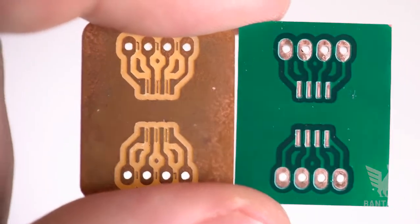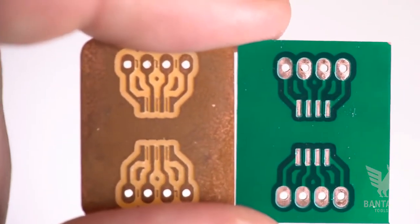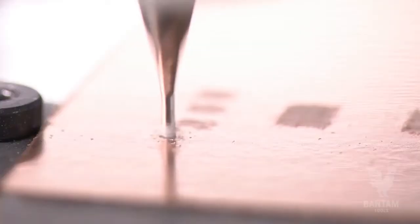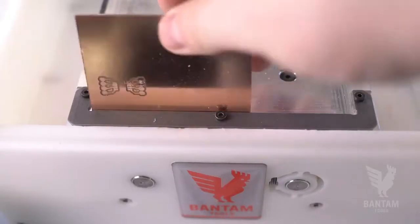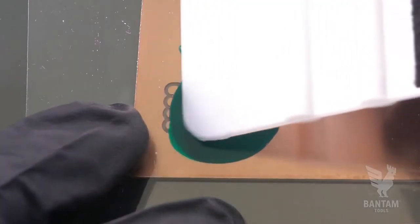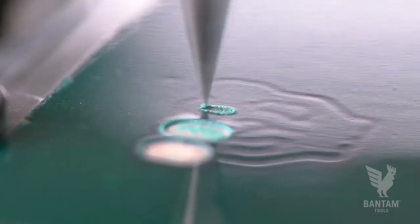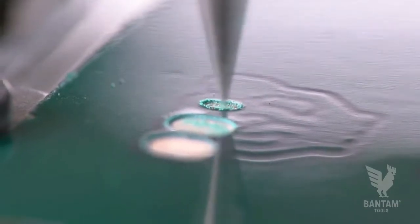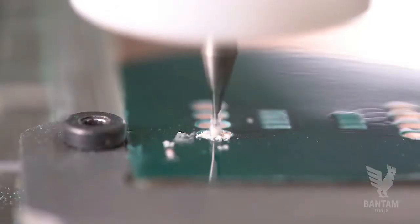A solder mask protects circuit boards from oxidation and helps prevent solder bridges from forming. To make our circuit board, we'll first mill the traces, remove the PCB from the mill, apply the solder mask, then reinsert the PCB and mill away the parts of the mask where we want the copper exposed. And finally, we'll finish the board by milling the holes in the outline.